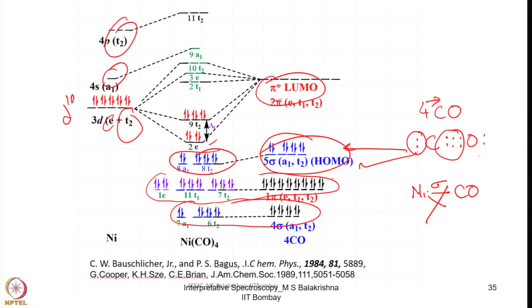The pi bond holds nickel tetracarbonyl together, but not as strongly as seen in chromium or iron carbonyl complexes. Nevertheless Ni(CO)₄ exists as a highly volatile compound, and CO can be readily dissociated—this is how pure nickel is generated through thermal decomposition of nickel tetracarbonyl.